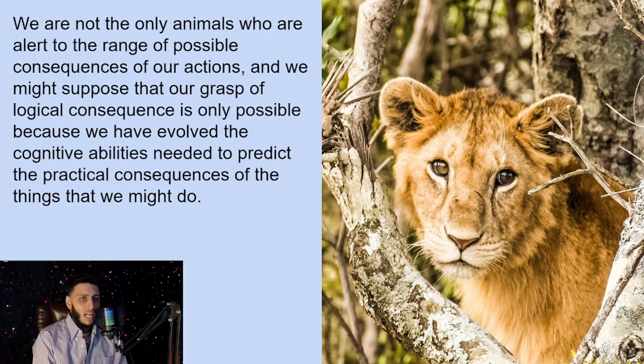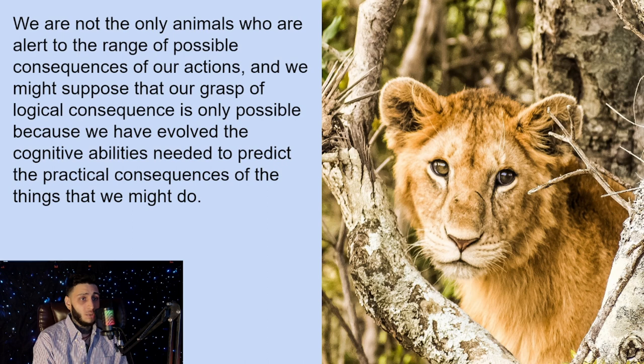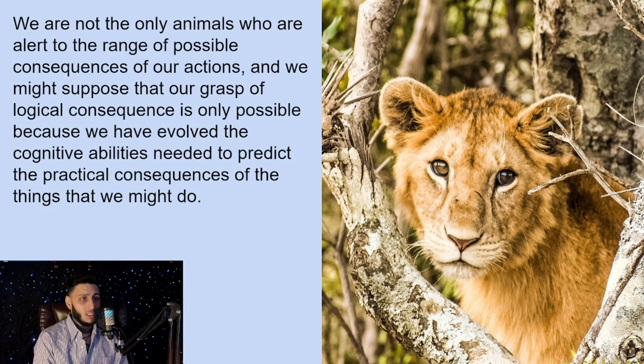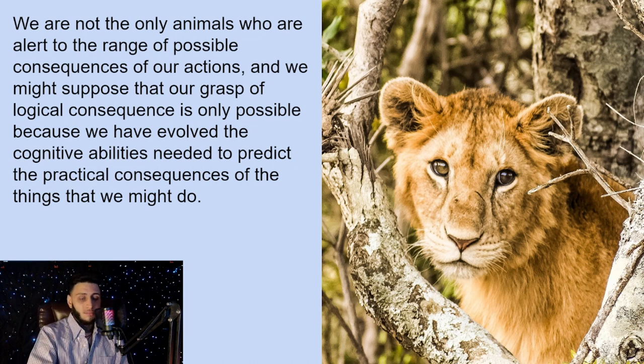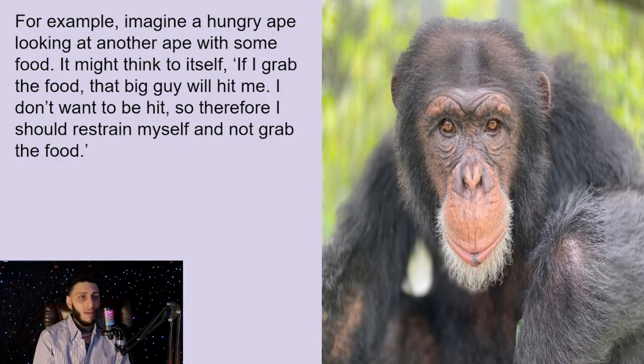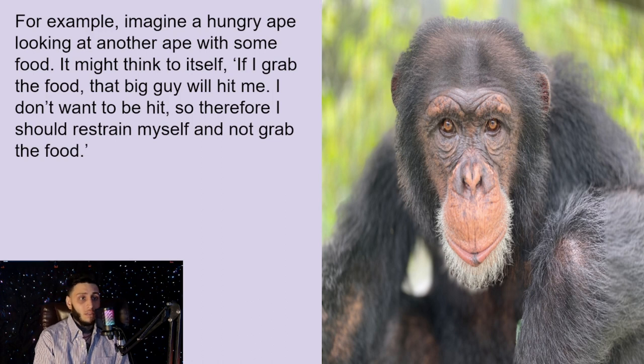We are not the only animals who are alert to the range of possible consequences of our actions, and we might suppose that our grasp of logical consequence is only possible because we have evolved the cognitive abilities needed to predict the practical consequences of the things that we might do. For example, imagine a hungry ape looking at another ape with some food. It might think to itself, if I grab the food, that big guy will hit me. I don't want to be hit, so therefore, I should restrain myself and not grab the food.